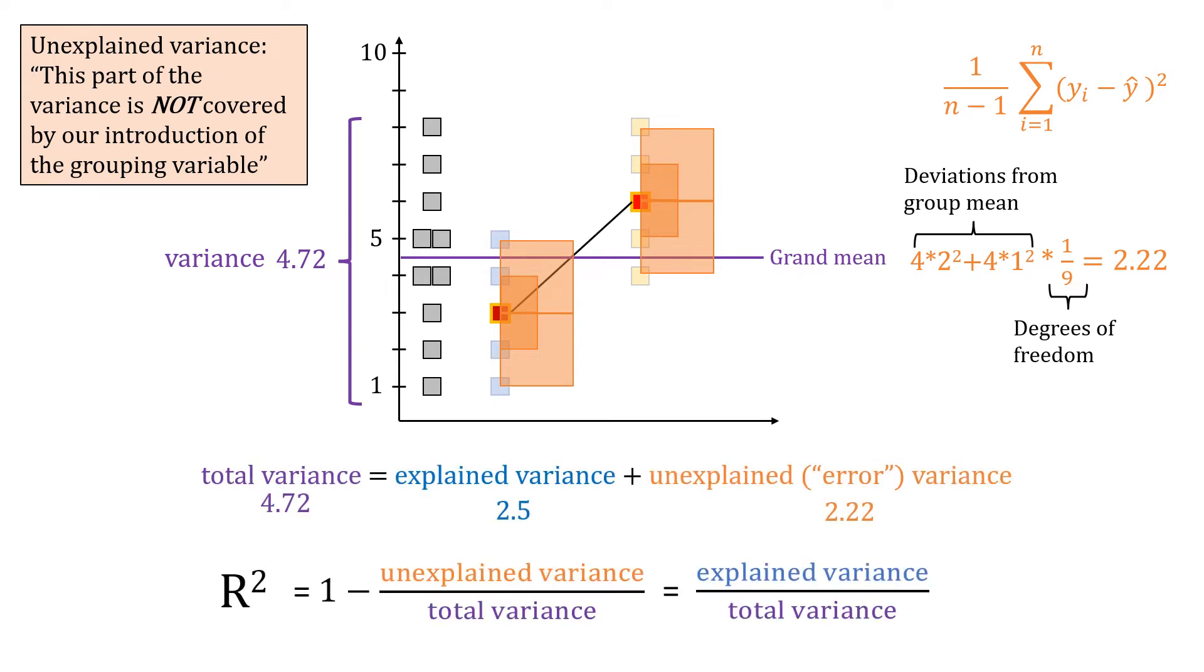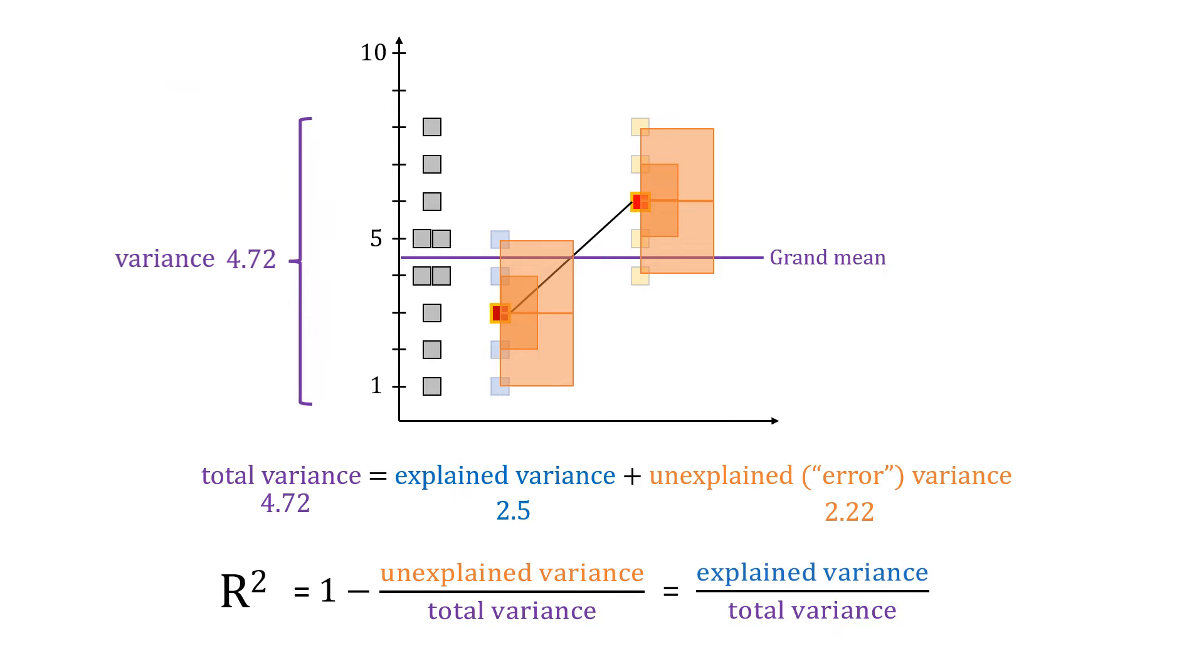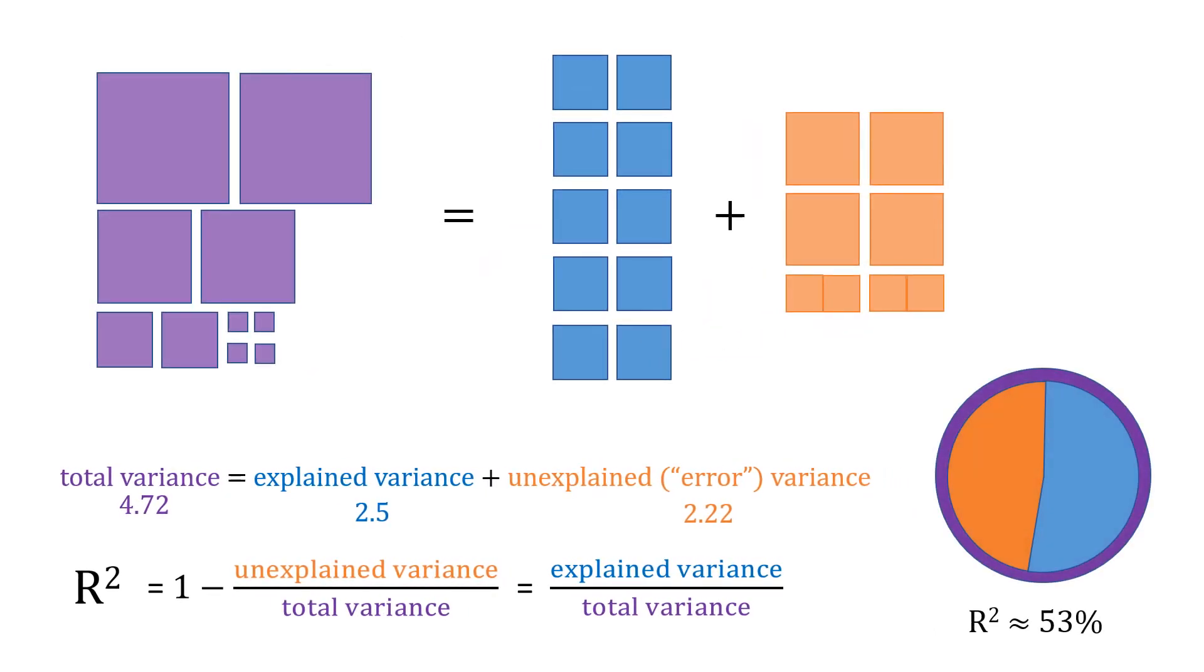Let's now combine what we did so far. These are all the different variances we calculated. Let's line them up according to the partition formula. We see that the variance explained is a little bit over 50%. Although it is correct, I think it is not as intuitive as it could be because the idea that explaining variance literally means that you reduce the variance in your outcome is lost. So we will now look at it from this angle.